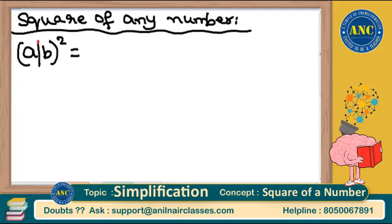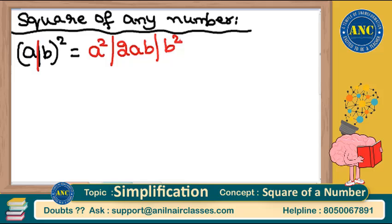a plus b whole square stands for a² + 2ab + b². Do not change the order — keep it in the same order. To find the square of a number, we will use the technique called a plus b whole square: a², 2ab, b² is the expansion.